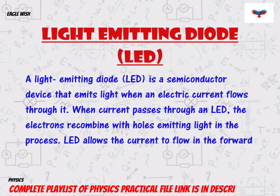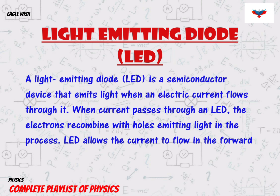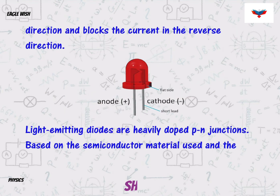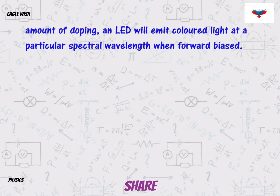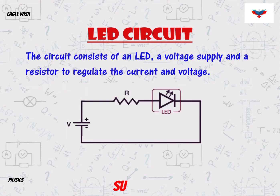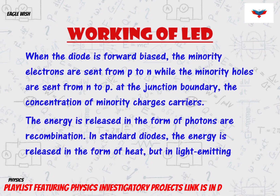Firstly we will write a brief introduction about what is light emitting diode. After that we will write and draw the symbol of light emitting diode along with its circuit diagram. It is important to note the working of LED along with its diagram.